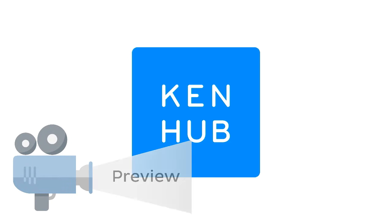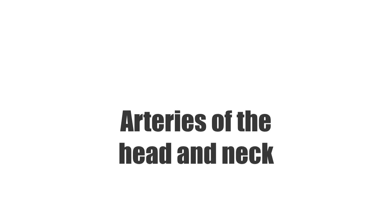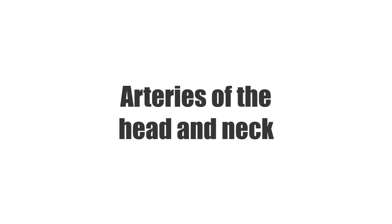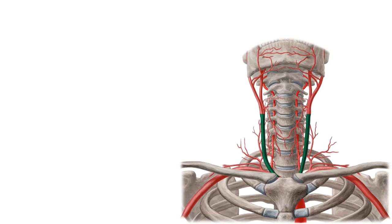Hey everyone, it's Megan from Kenhub and in today's tutorial we will briefly talk about the arteries of the head and neck. In the following image we can see the right and left common carotid arteries highlighted in green. The left one originates from the arch of the aorta and the right from the brachiocephalic artery, before they divide to supply the head and neck regions.